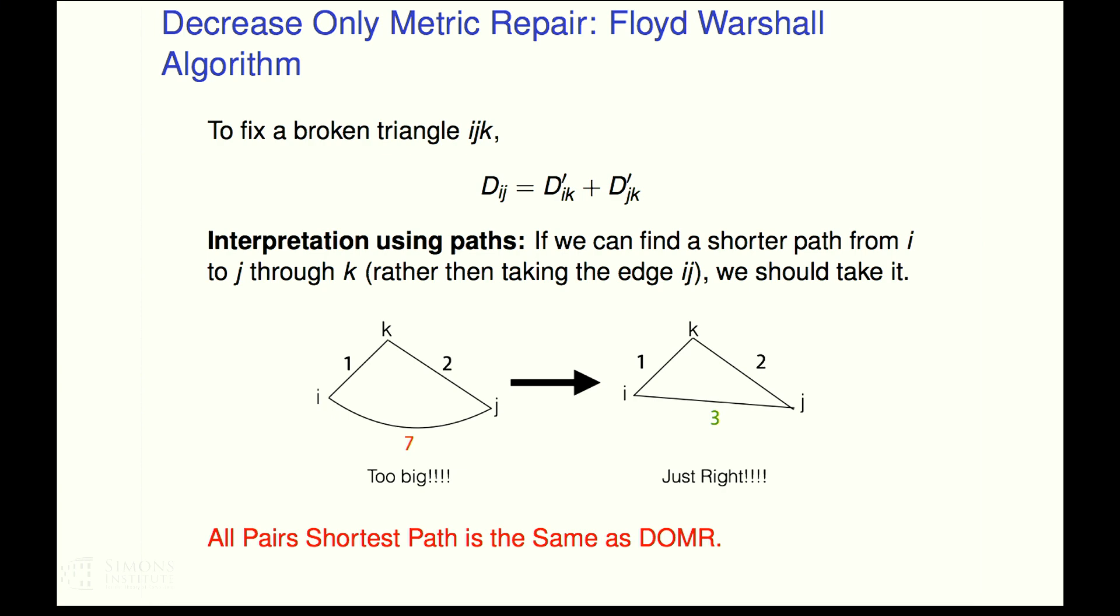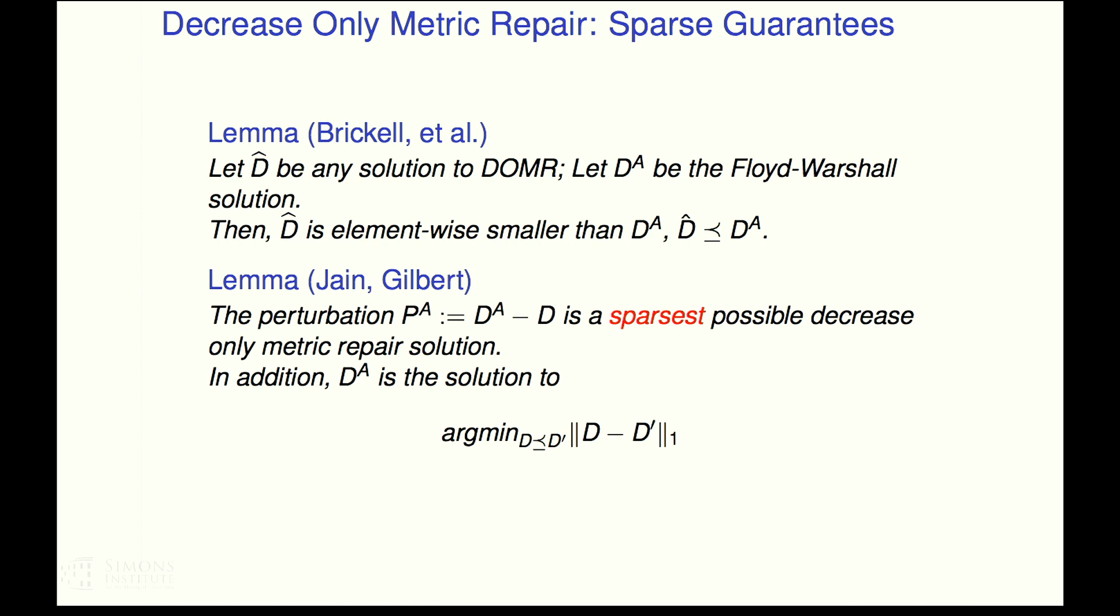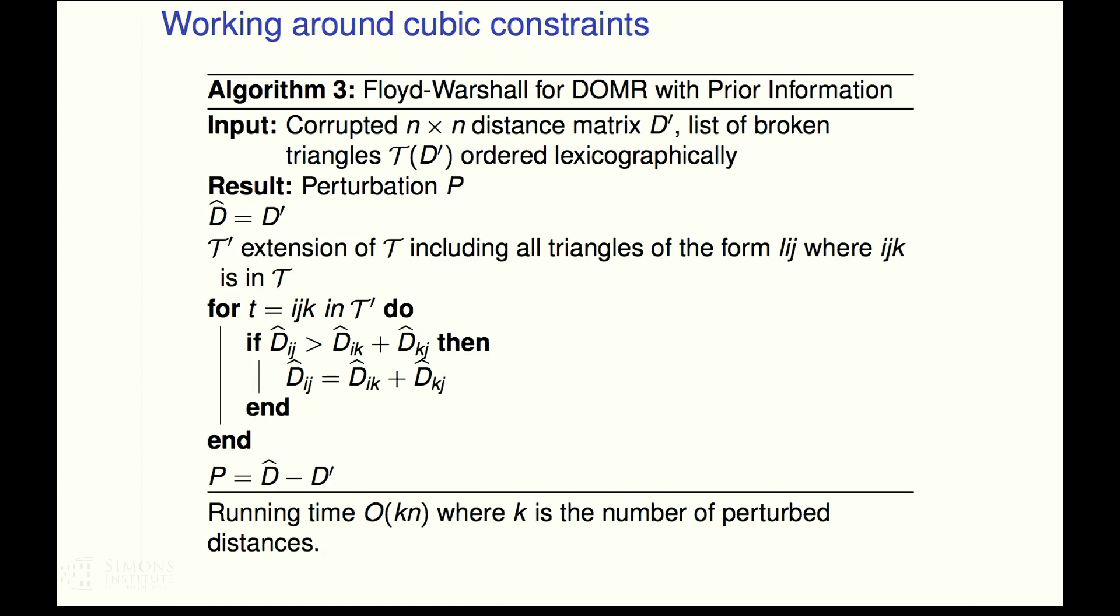So you can actually prove a nice result that all pair shortest path algorithm is the same as the, sorry, this problem, all pair shortest path is the same problem as decrease only metric repair. And this was noticed a little bit in this original paper by Brickell. They noticed that they had an algorithm that they observed was the same as the Floyd-Warshall solution. And they noticed, element wise, what you returned was no bigger than the all pair shortest path solution. And then what my post-doc, Lilith Jane and I showed is that, in fact, actually that is the sparsest possible decrease only metric repair. And in fact, you can also show that it is the closest in L1 norm, which is kind of cute. A beautiful combinatorial algorithm gives you the closest repair in L1 norm. And it's also the sparsest. So it's lovely.